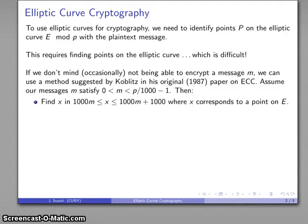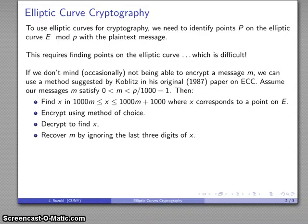Then we can find some value x in the interval 1000m to 1000m + 1000. The idea is that this x corresponds to some point on our elliptic curve. We can encrypt and decrypt using whatever method, and recover m by ignoring those last three digits.